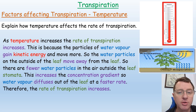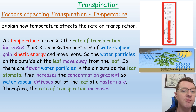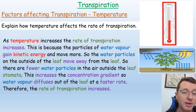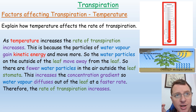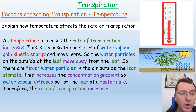The final experiment, again using the potometer, is to change the temperature. As temperature increases, the rate of transpiration increases. This is because the water vapor particles gain kinetic energy and move more, so particles outside the leaf move away faster. There are therefore fewer water particles in the air outside the leaf's stomata, which increases the concentration gradient — a greater difference between the air spaces within the leaf and the water vapor outside. So water vapor diffuses out of the leaf at a faster rate, and the rate of transpiration increases.